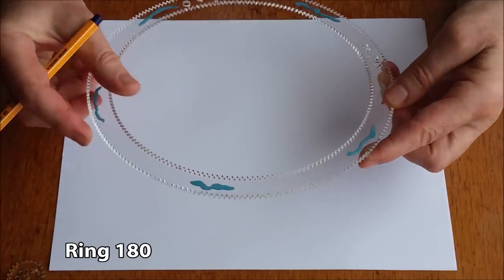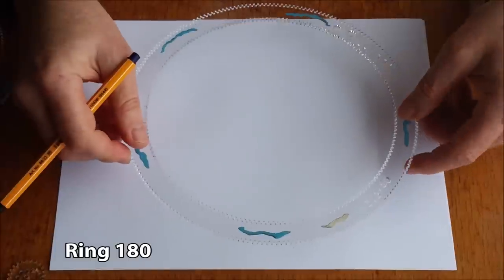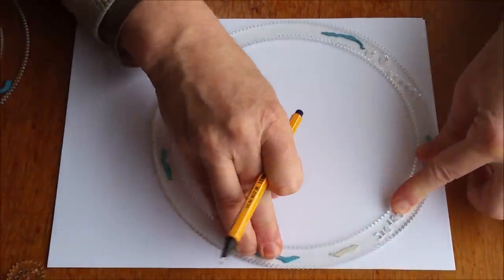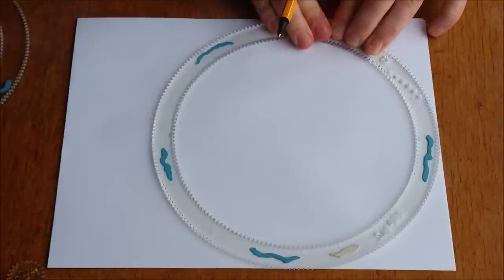So this time I'm going to use a larger ring. This ring has 180 teeth in the inside. And again, using the same kind of putty, blue tack or poster putty or spiro putty.